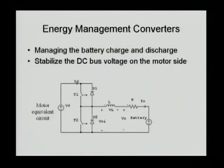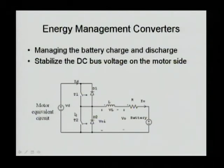Between the battery and the DC bus there is usually a bidirectional DC-DC energy management converter. Its two purposes are: first, to step up battery voltage to a level more suitable for the motor drive power devices; second, to maintain the DC bus voltage relatively constant while managing battery charge and discharge to extend battery life. The converter consists of two switches, two diodes, and one inductor.